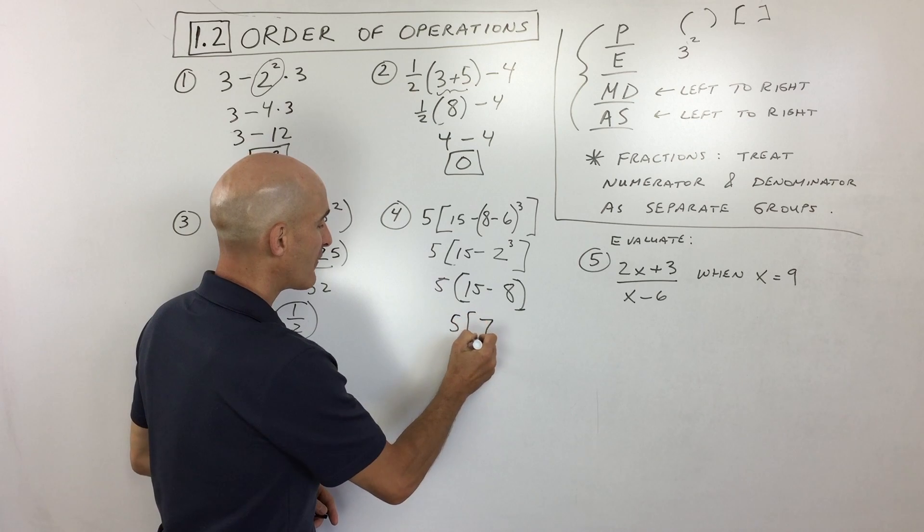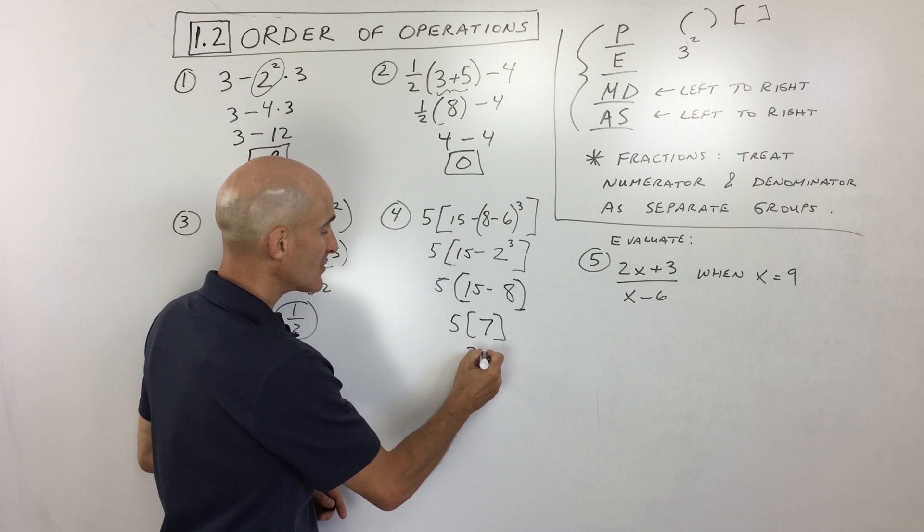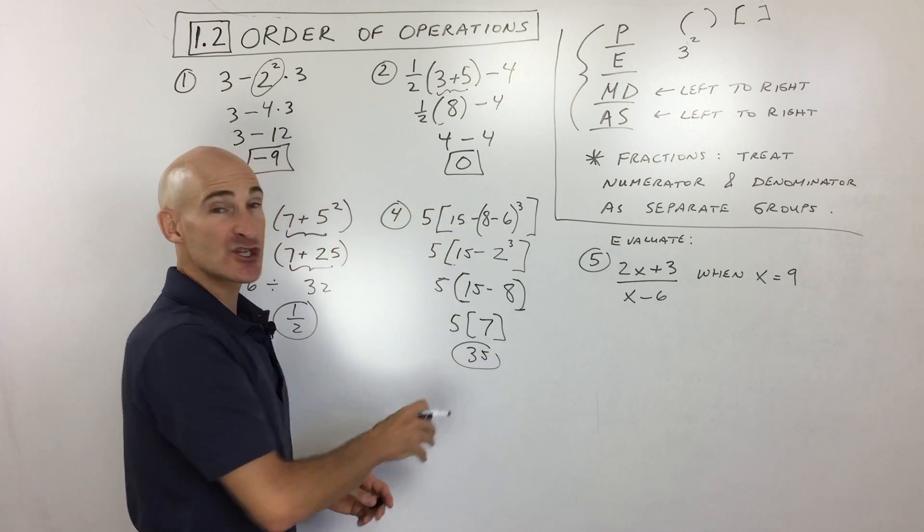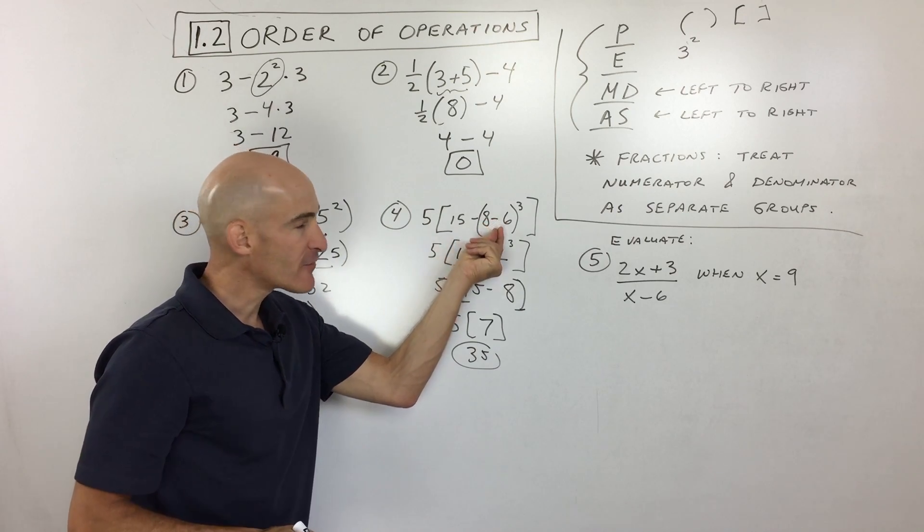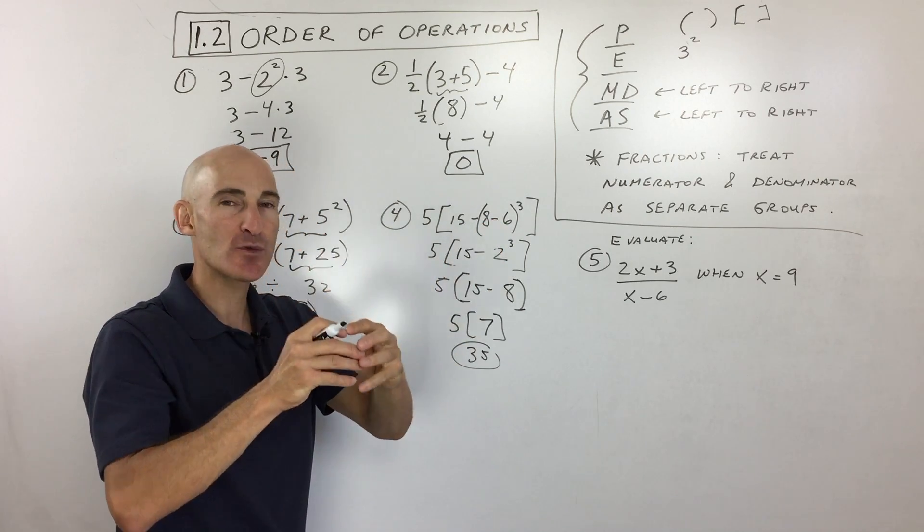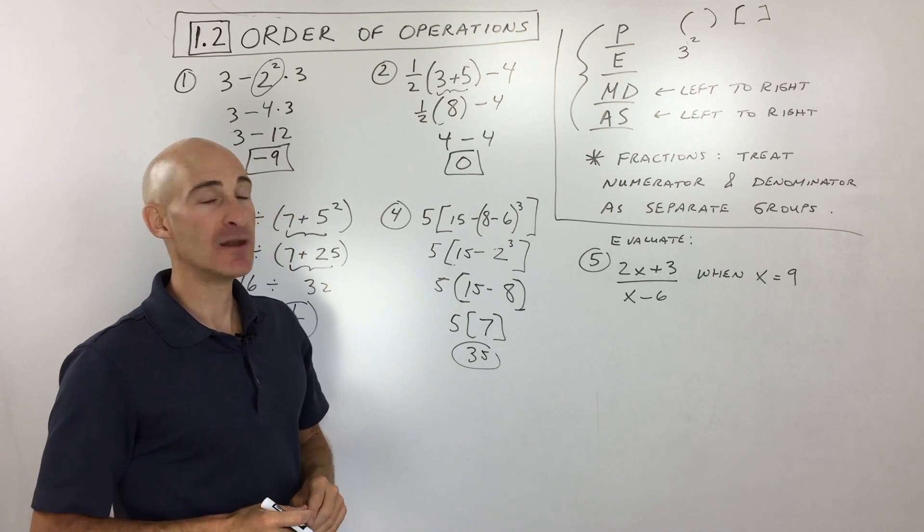15-8=7. The 5 and 7 are right next to each other with nothing in between, so they're multiplied together. 5·7=35. This is a more challenging problem because we had parentheses within parentheses, but start from the innermost parentheses and work your way out, always keeping PEMDAS in mind.